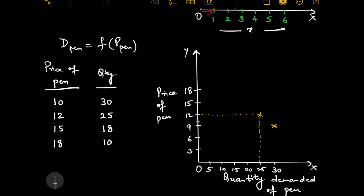18 would be somewhere here. This is my third point. And if price of pen is 18, I am willing to buy 10 pens. This is how I am going to derive a demand curve.